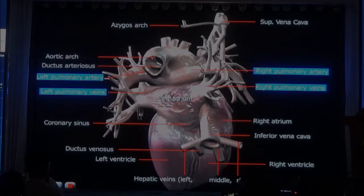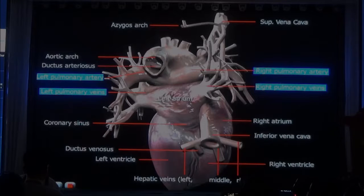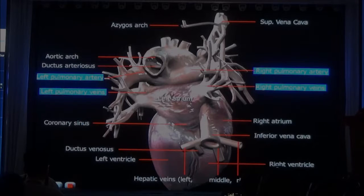Now, here we have the left atrium. We have the pulmonary arteries here, and then in between the left atrium and the left ventricle, we have a big vein that drains the heart. This is the coronary sinus.